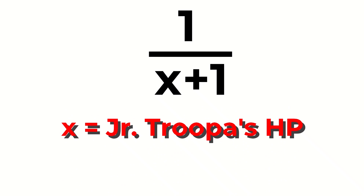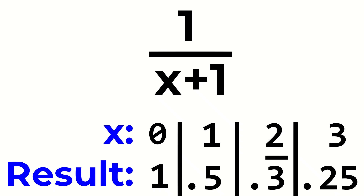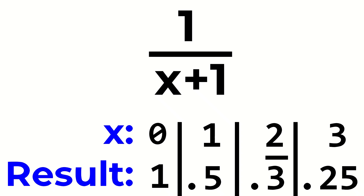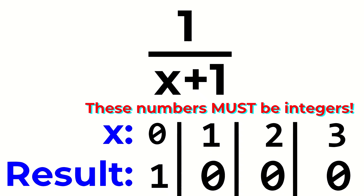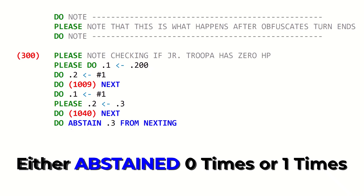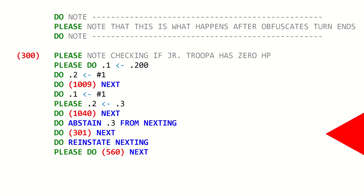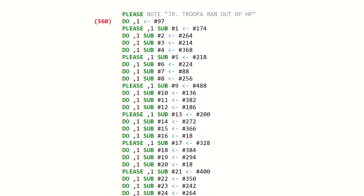To check if a number is 0 or not, we use the expression 1 over x plus 1, where x is the variable. If x is 0, the expression simplifies to 1. But if x is any higher than 0, it simplifies to something lower than 1. Intercal cannot handle fractions, so a half, a third, a quarter, and so on all simplify down to 0. After performing this division using the Intercal Subroutine Library, we abstain the result — so we either abstain 0 times or abstain 1 time. If we abstained 0 times, we do Label 301 next. But if we abstained 1 time due to Junior Troopa's HP being 0, Label 301 is skipped, nexting is reinstated, and it does Label 560 next, where a win message is printed and the game ends.